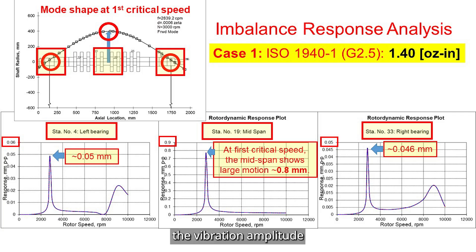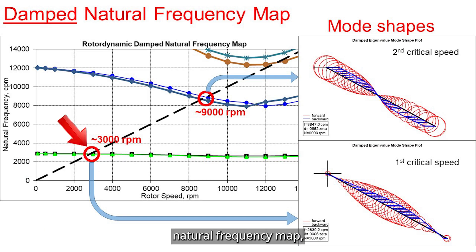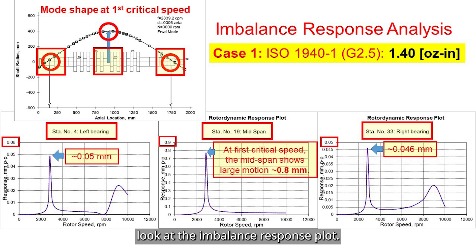This plot shows the vibration amplitude at each of those points, which are left bearing, mid-span, and right bearing locations. At the first critical speed, we will see what happens at 3000 rpm, and the second critical speed at 9000 rpm. Now we look at the imbalance response plot. Notice what happens at the first critical speed around 3000 rpm. The rotor vibration becomes quite large.